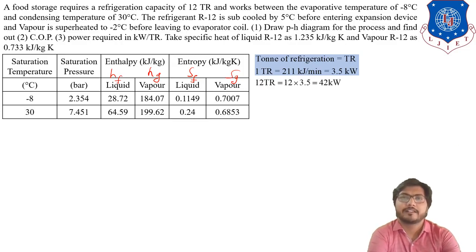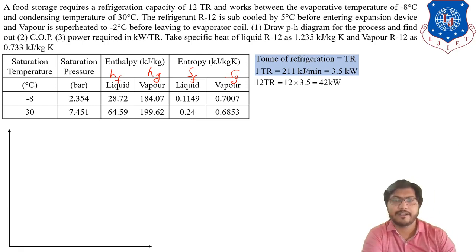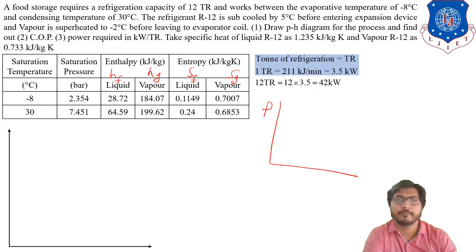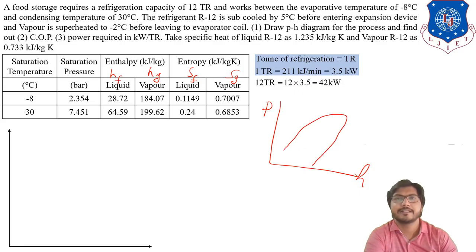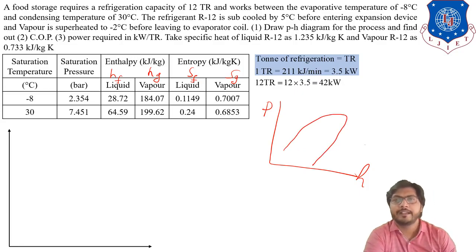The given capacity is 12 TR, which converts to 42 kW. Next, we draw the P-H diagram for this numerical. The P-H chart has pressure on the y-axis and enthalpy on the x-axis. We draw horizontal pressure lines corresponding to minus 8 degrees evaporating temperature at 2.3 bar and 30 degrees condensing temperature.